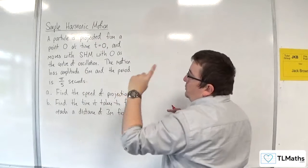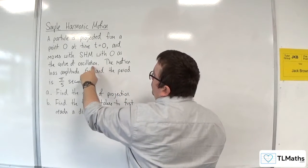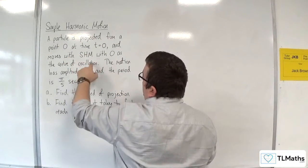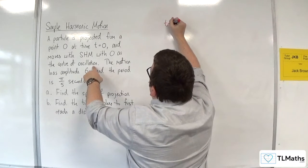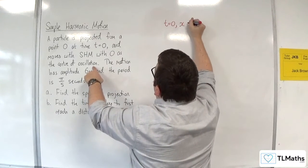Now what that's telling me is that when t equals 0, x, the displacement, will be equal to 0 as well, because it's starting from O, and that is the centre of oscillation. So when t equals 0, x equals 0.